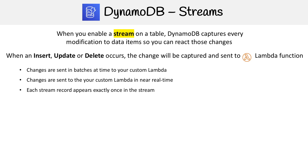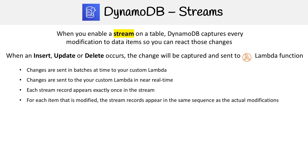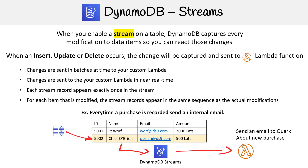Each stream record appears exactly once in the stream for each item that is modified. The stream records appear in the same sequence as the actual modification. So here's an example — let's say I update an item.